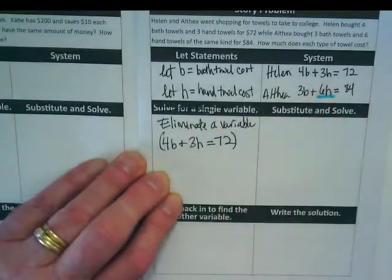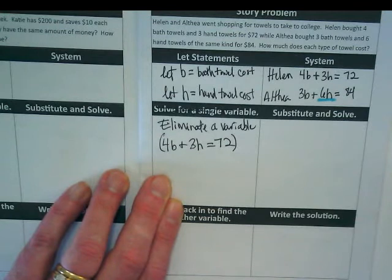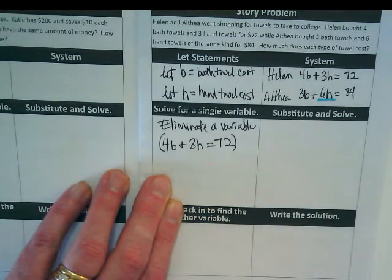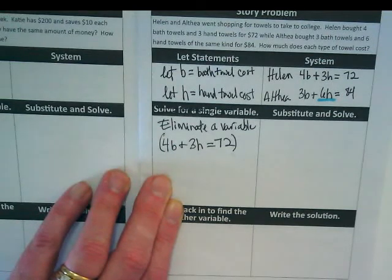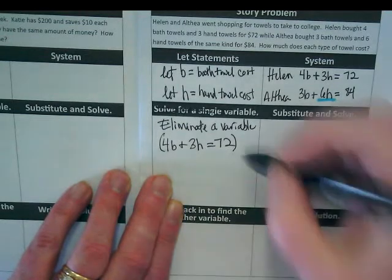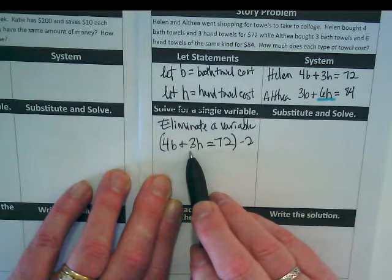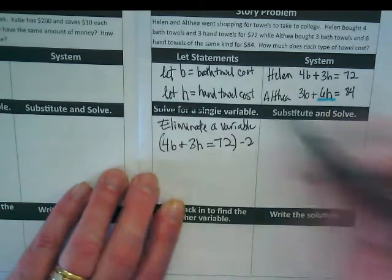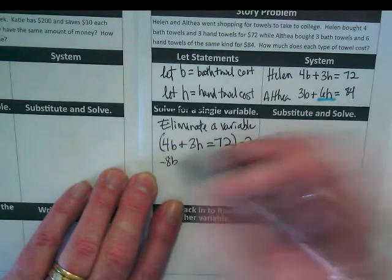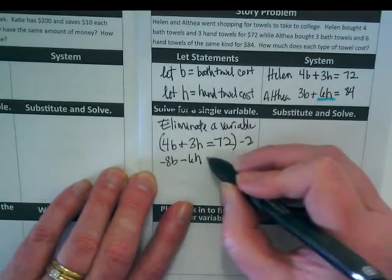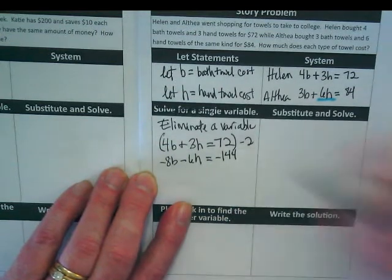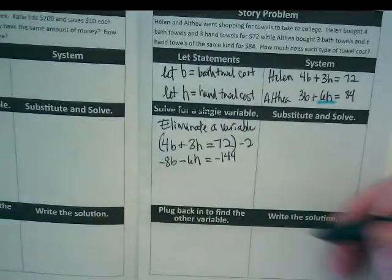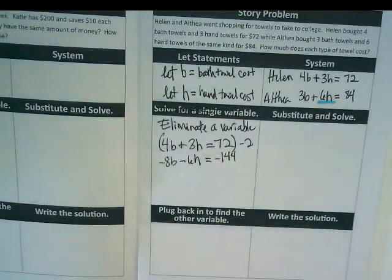So I'm going to take the first equation and I'm going to rewrite it down here. And I'm going to multiply that whole equation by negative 2. How did I come up with the negative 2? I need to turn the positive into a negative. I want to turn this 3 into a negative 6. So I have to multiply everything by negative 2.